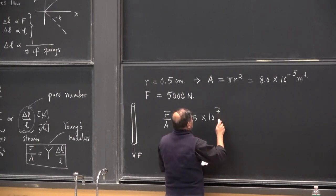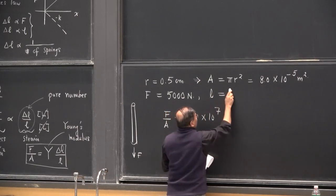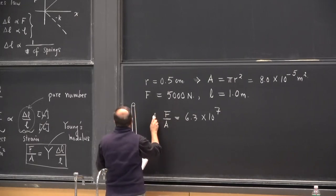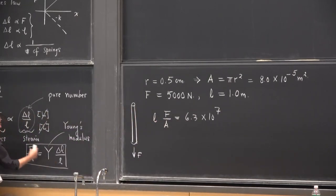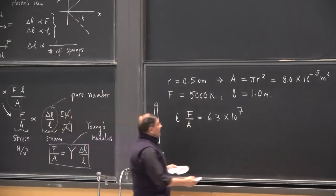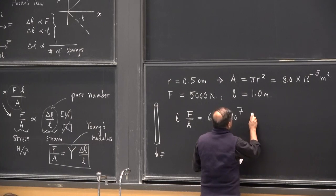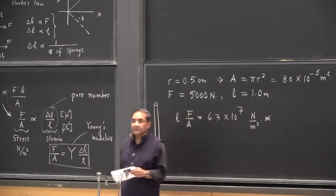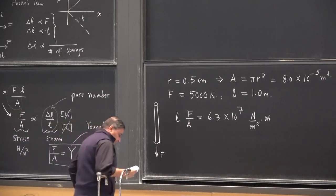One thing I should have mentioned: I have taken the length of this wire as 1 meter. So it is force per unit area times L — L is brought over to this side — and this number is therefore newtons per meter squared times a meter, so therefore newtons per meter.